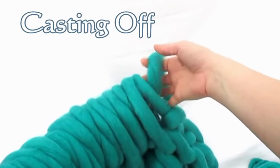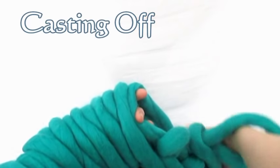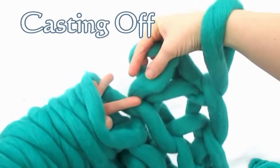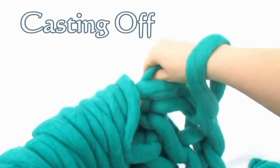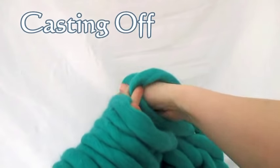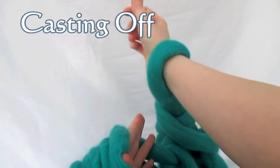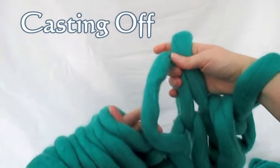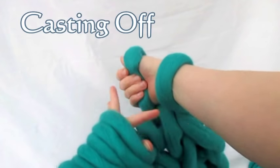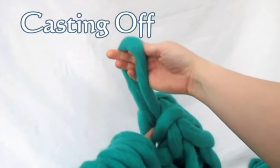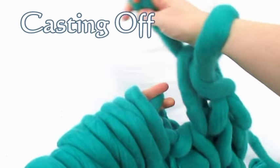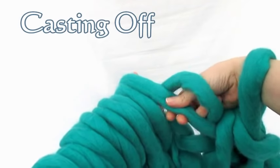To do this, we need to slip the first stitch like we always do, and then we're going to follow our pattern, so that means purling the next stitch. So we're going to purl this one, and then hold it in our hand. Don't actually put it all the way on our arm. Just hold it in our hand, and then take the back loop over the front loop and drop it off. And we continue doing this all the way. So this is a knit stitch. We're going to knit this one. Hold it in our hand, drop the back loop over the front one, and drop it off. And we're going to continue doing that. That's the cast off. Do that until you have one loop left.